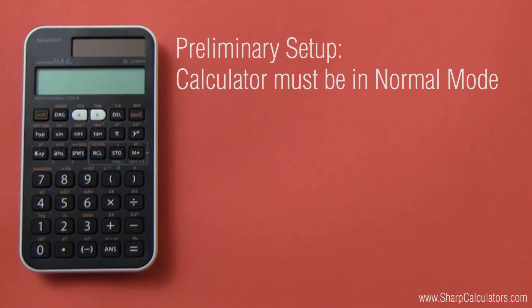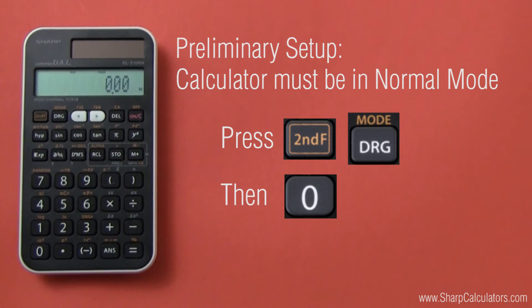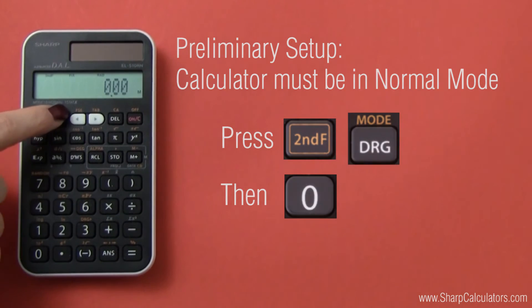To calculate roots, your calculator needs to be in normal mode. To get in normal mode on your 510RNB, press 2, then 0.